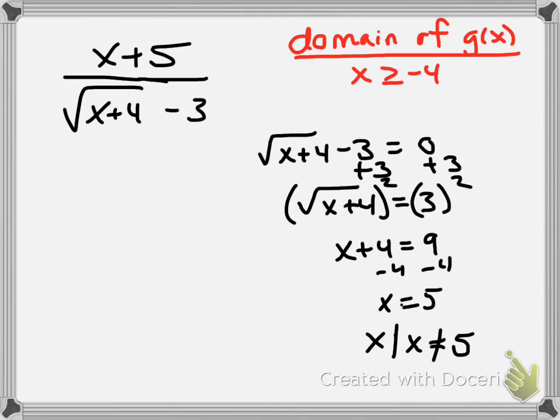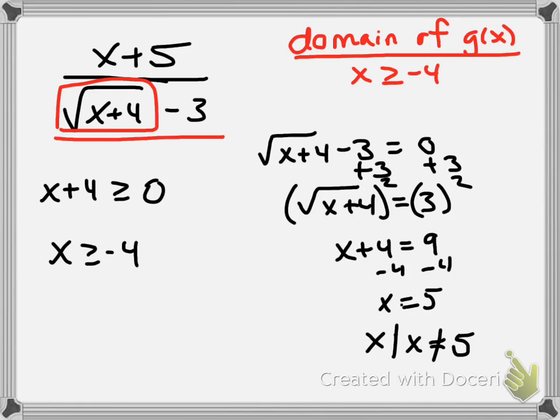So that's part of it. The next part is we look at our individual radical. So we've looked at the denominator as a whole, now we look at the radical itself. And that, our rules for radicals are that we set the radicand, the x plus 4, greater than or equal to 0. And when I solve this, x is greater than or equal to negative 4. That is the other restriction. Now you'll notice that's the same as the domain of g(x), so that works out very nicely.